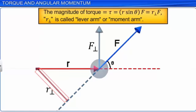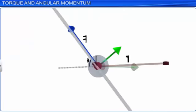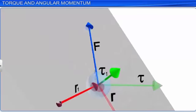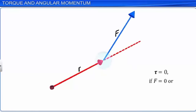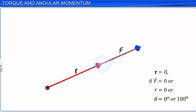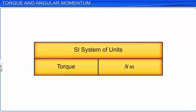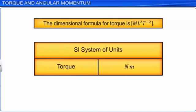Note that torque is defined about a specific point, usually called the origin. The torque of the same force about a different origin is different, so identifying the origin is very important. Torque can be zero if the magnitude of the force is zero, or if the line of action of the force passes through the origin. The SI unit of torque is newton-meter. The dimensional formula is M·L²·T⁻². Although torque and work have the same dimensional formula, work is a scalar whereas torque is a vector.